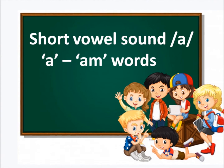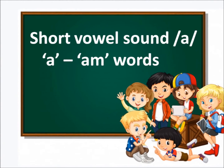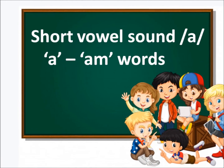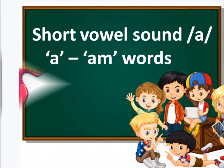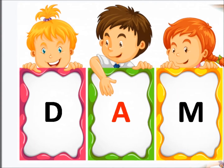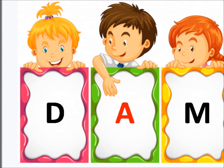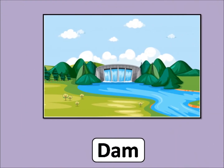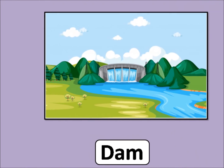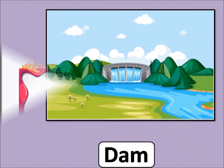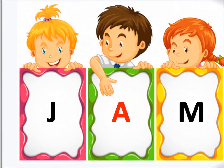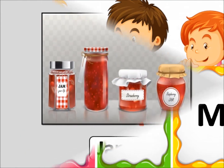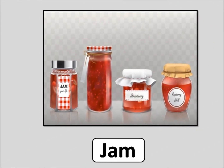Now next one is AM words. It will sound like: A, M — Am. D, A, M — D, Am — Dam. J, A, M — J, Am — Jam.